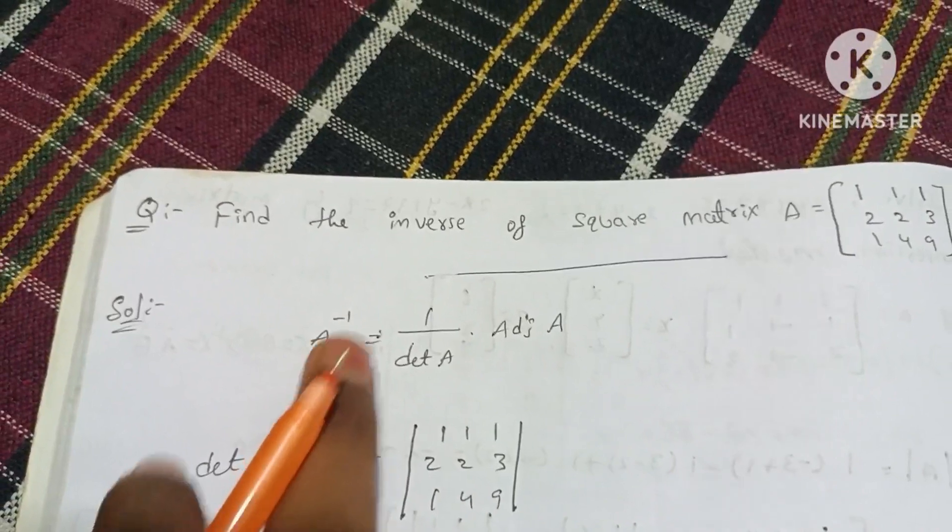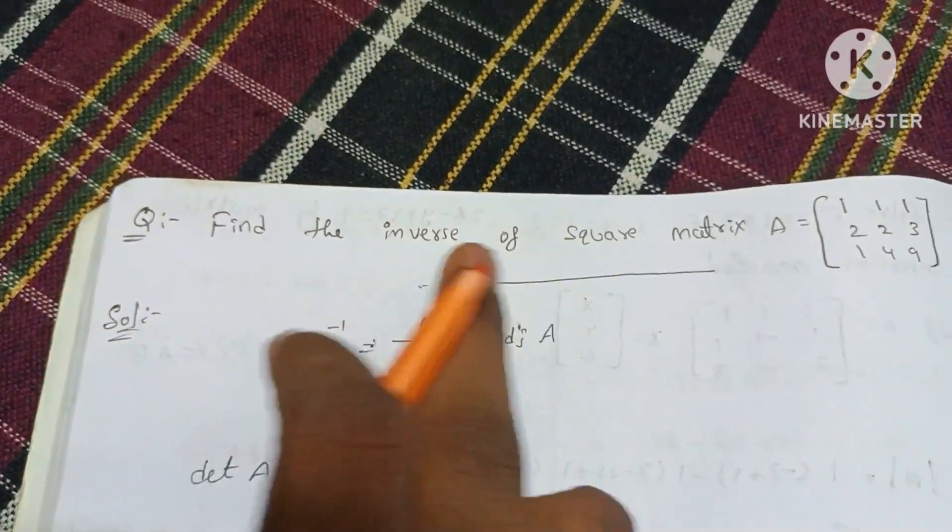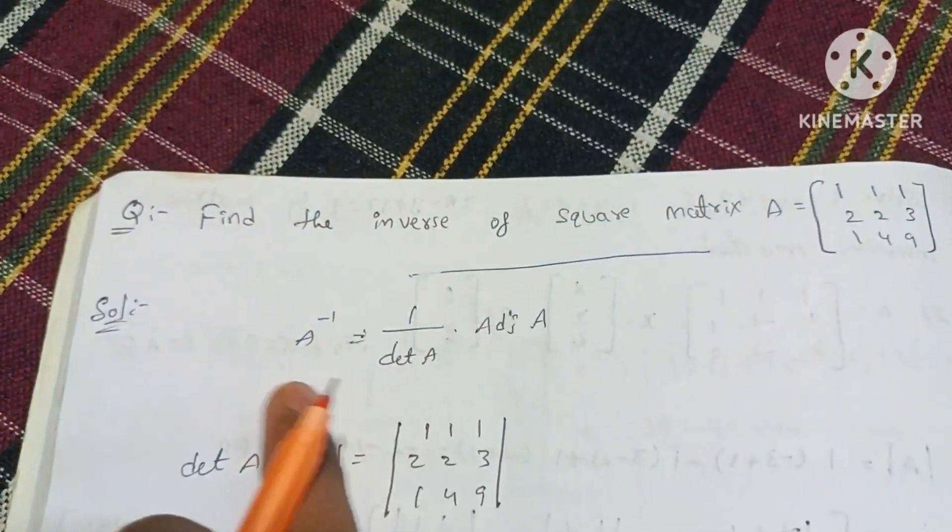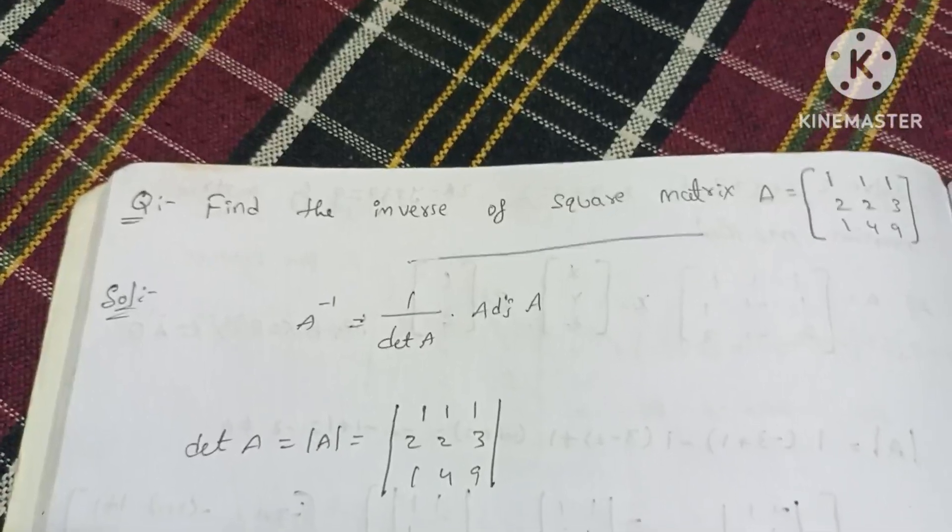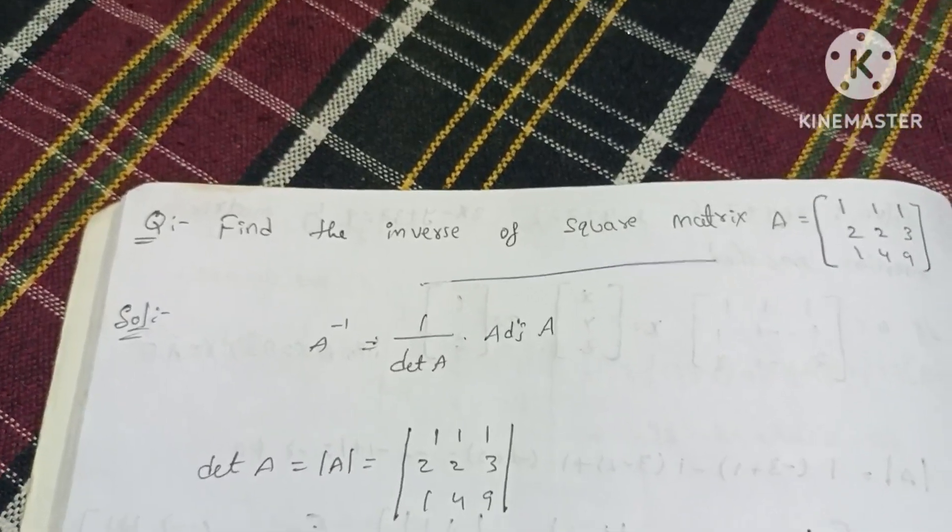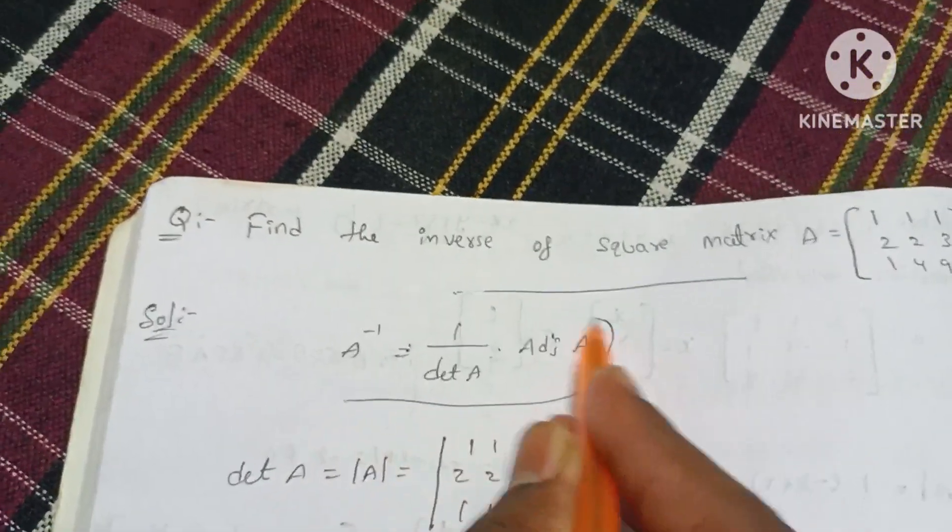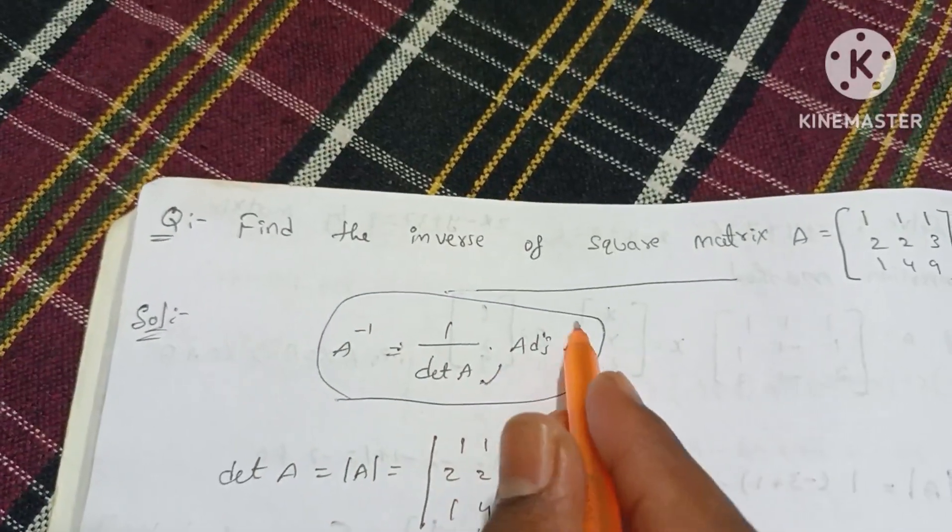The inverse matrix formula - this is the inverse of square matrix. This is the formula: A inverse is equal to 1 by det A into adjoint A. So this is the first one. The first one is the det A and the adjoint A.